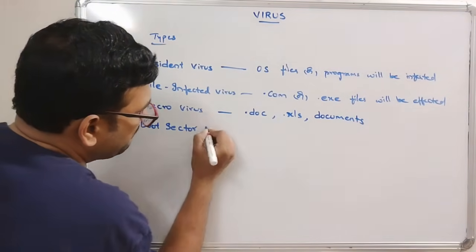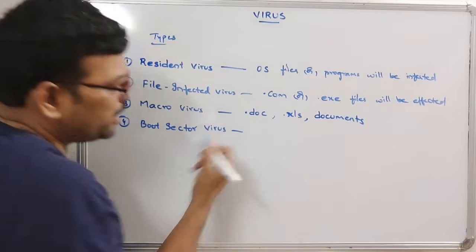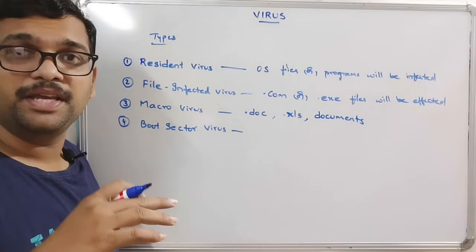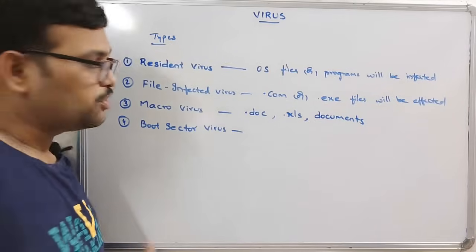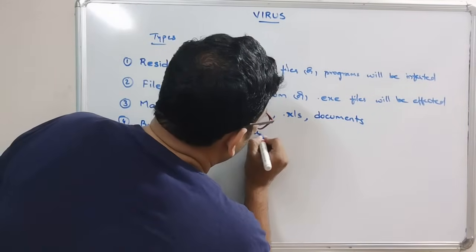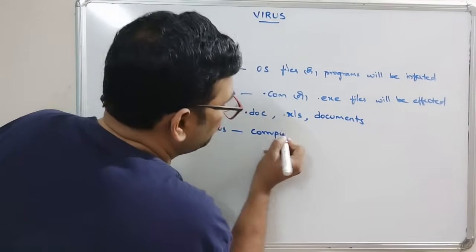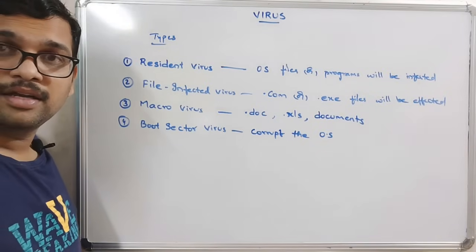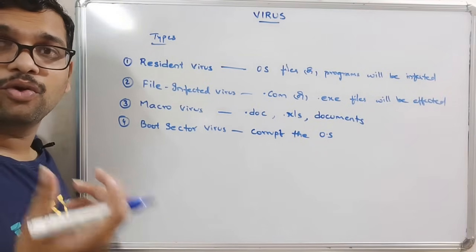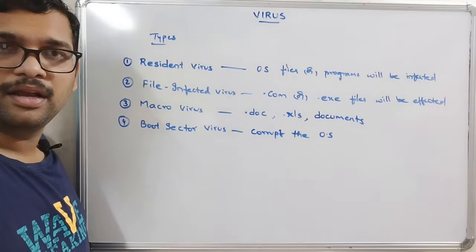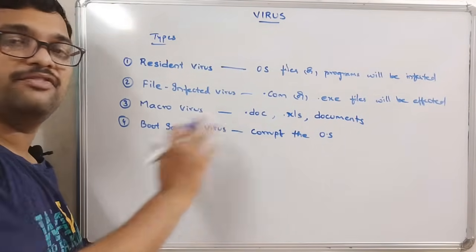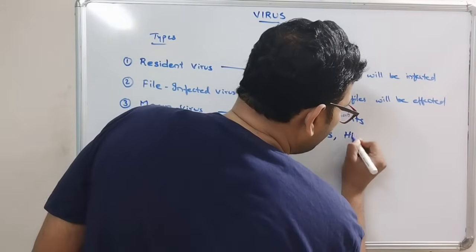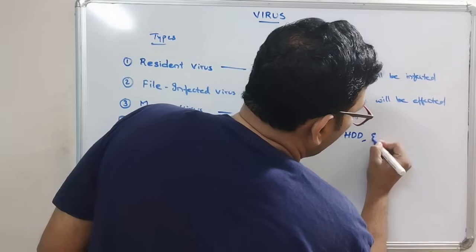Next is the boot sector virus. As the name indicates, it affects the boot sector — that is the bootstrap loader. The virus resides in memory and corrupts the operating system, because the bootstrap loader is responsible for loading the operating system into main memory. If the bootstrap virus is present, it will corrupt the OS. It resides on the hard disk or external drives.